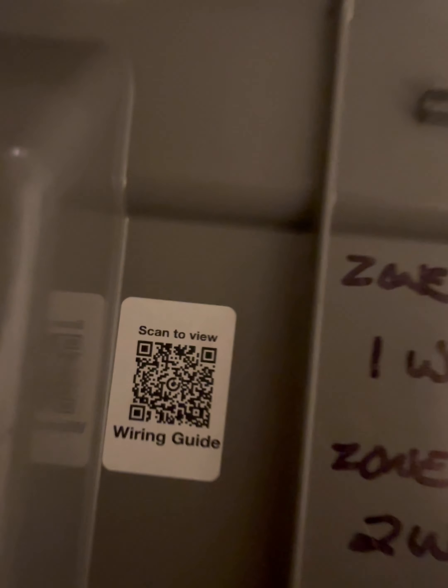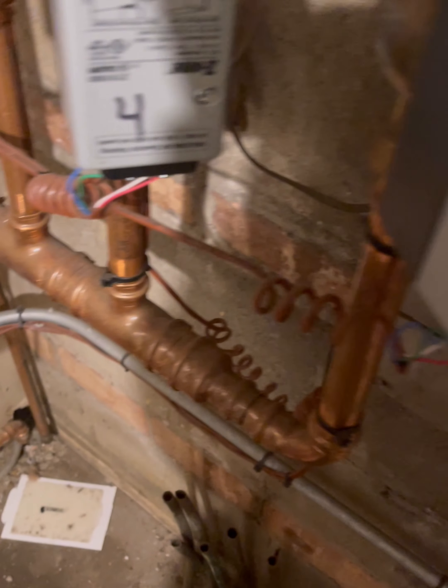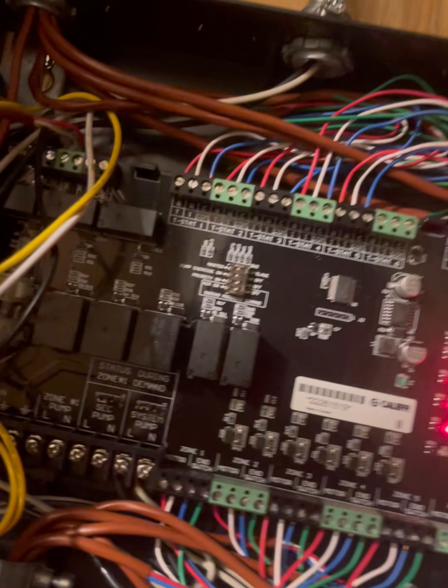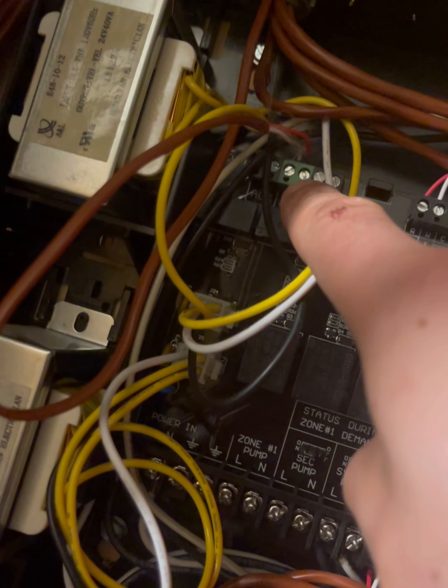Okay, so this is the zone relay. I guess if you go over here and it says scan here to get the wiring diagram, but when you go there the website doesn't even exist. So that's a good sign, right? So this would be the thermostat signal out to the system.